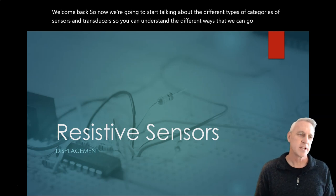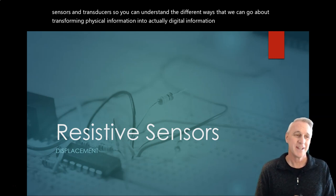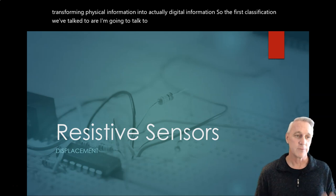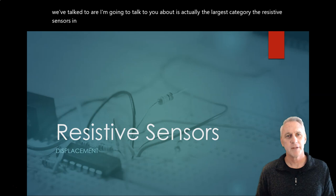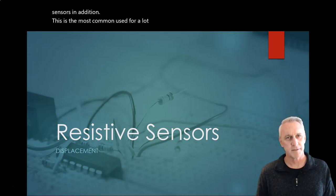So the first classification we're going to talk about is actually the largest category, the resistive sensors. In addition, this is the most common used for a lot of displacement types of measurements, but let's go ahead and dive in.